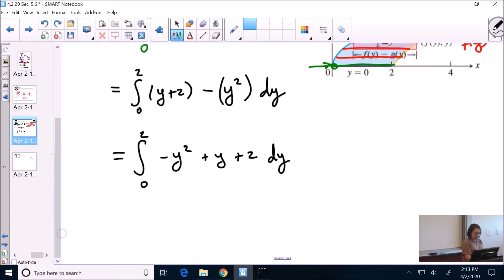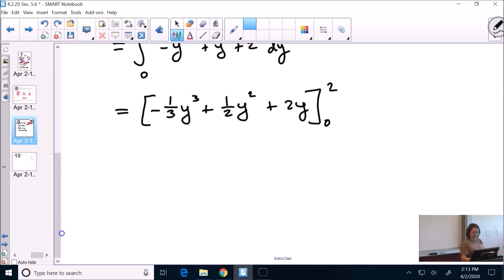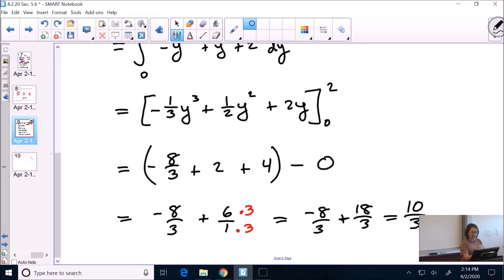Alright, we'll work it out. Antiderivative. So negative, we add 1 to the power, divide by the new power. Plus, we add 1 to the power, we divide by the new power. Plus y. From 0 to 2. Plug in 2. That'd be negative 8 over 3. Plus, 2 squared is 4, divided by 2 is 2. 2 times 2 is 4. Minus, we plug in 0, it's all gone. Again, it's our friend. So negative 8 over 3. 2 and 4 make 6 over 1. Common denominator is 3. Negative 8 over 3, plus 18 over 3. That gives us 10 over 3. There's your area.